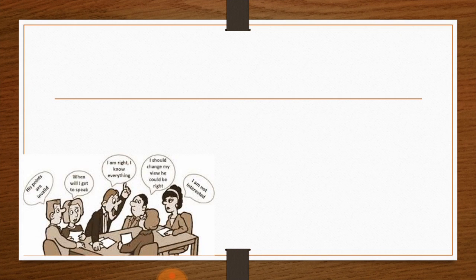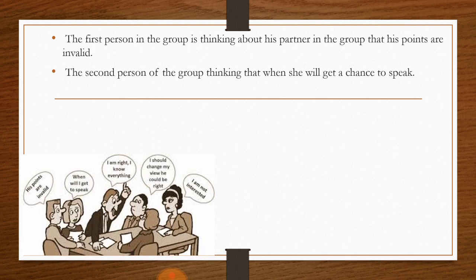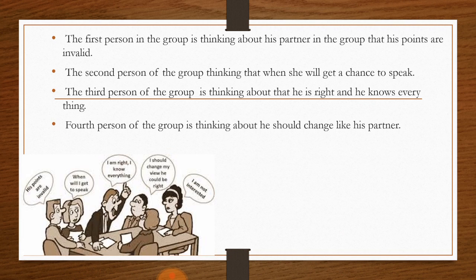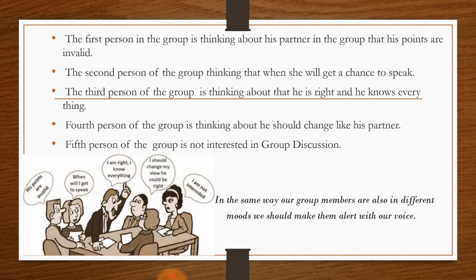Looking at the given figure: the first person in the group discussion is thinking his partner's points are invalid. The second person is thinking about when she will get a chance to speak. The third person thinks he is right and knows everything. The fourth person thinks he should change his partner. Around 50% of the group is not interested in the discussion at all. Our group members may be in different moods, so we should make them alert with our sweet voice.